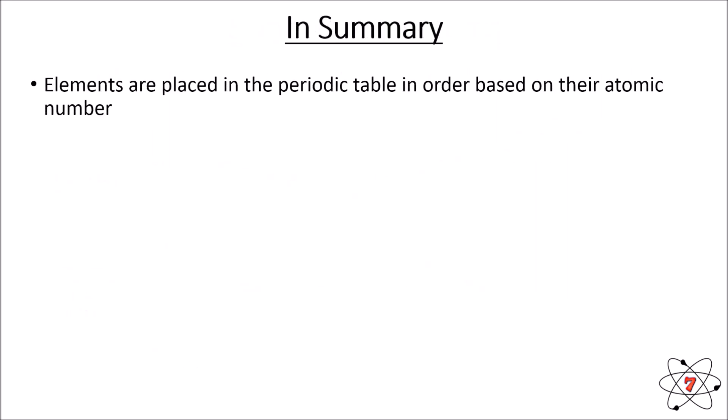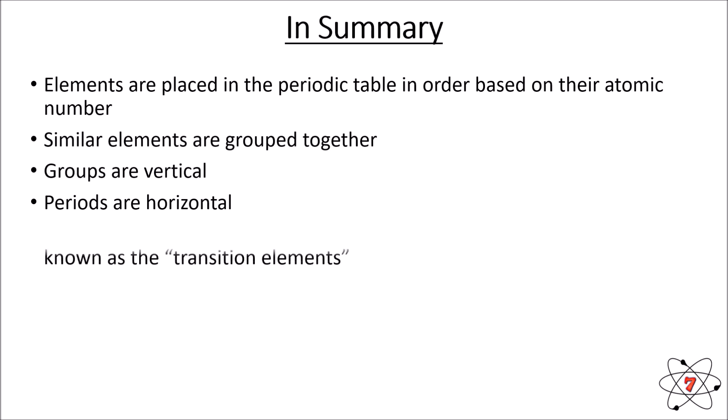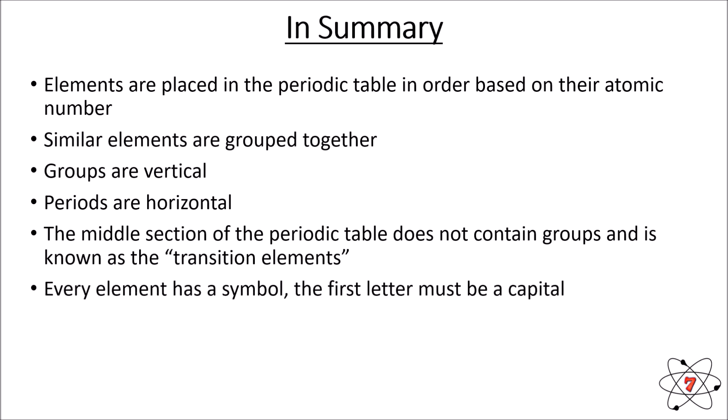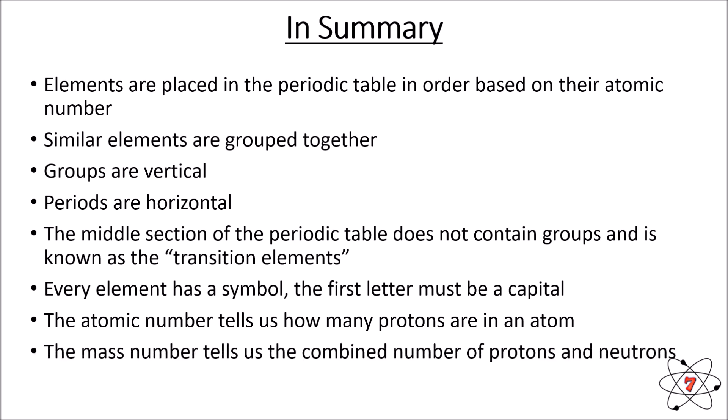In summary: elements are placed in the periodic table in order based on their atomic number. Similar elements are grouped together. Groups are vertical, periods are horizontal. The middle section, known as the transition elements, does not contain groups. Every element has a symbol whose first letter must be a capital. The atomic number tells us how many protons are in an atom, and the mass number tells us the combined number of protons and neutrons and the mass in atomic mass units.